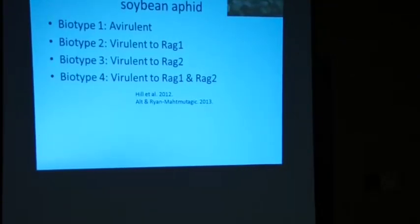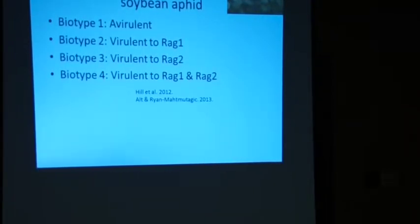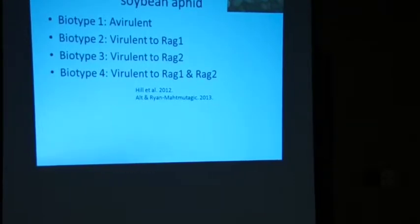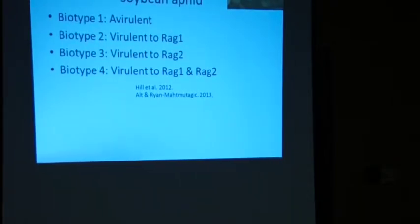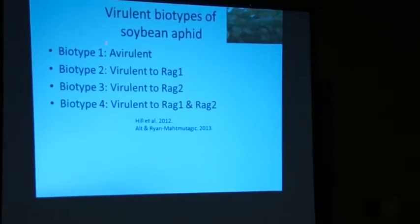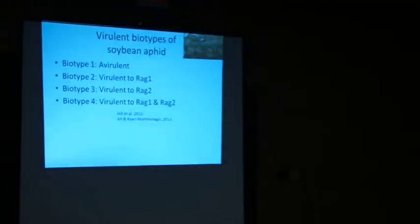One reason a single gene trait might be overcome is aphid biotypes. Biotype 1 is avirulent — it doesn't do well on a resistant plant. Biotype 2 is virulent — it can overcome resistance specifically to the RAG1 trait. And biotype 4 can actually overcome those pyramided lines. This justifies finding new sources of resistance and pyramiding more genes together, which is part of the work being done at the University of Minnesota — screening different lines to find traits to breed into publicly available varieties.